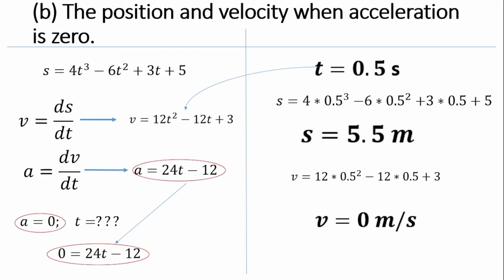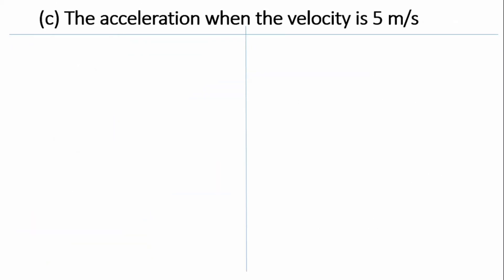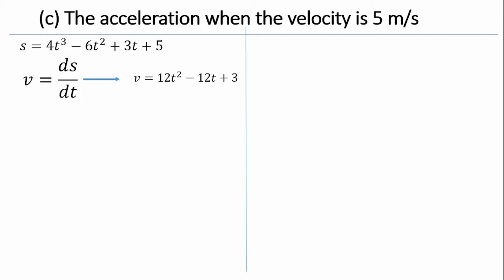When the acceleration is zero, the velocity is also zero — noting that both acceleration and velocity are changing with time. The next question asks for the acceleration when velocity equals 5 m/s. Similar to the previous question, we first need to find the time at which velocity equals 5 m/s.